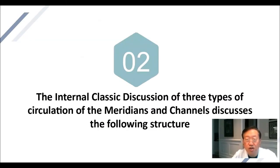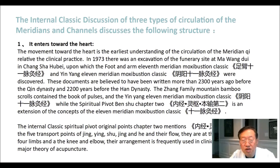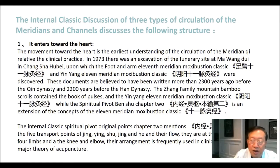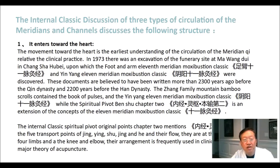Part 2: The internal classic discussion of the three types of circulation of the meridians and channels. One: it enters toward the heart — the movement toward the heart is the earliest understanding of the circulation of the meridian qi relative to clinical practice. In 1973, there was an excavation of the funerary site at Mawangdui in Changsha, Hubei, upon which the foot and arm 11 meridian moxibustion classic and yin yang 11 meridian moxibustion classic were discovered, believed to have been written more than 2,300 years ago. The zhang family mountain bamboo scrolls contained the book of pulses and the yin yang 11 meridian moxibustion classic, while the spiritual pivot benshu chapter 2 is an extension of the concepts of the 11 meridian moxibustion classic.